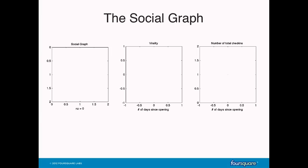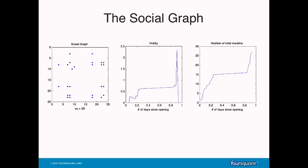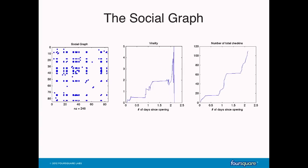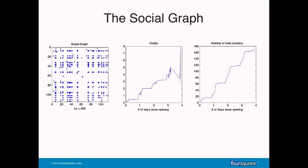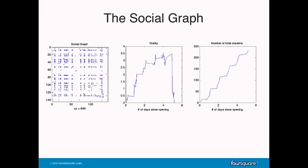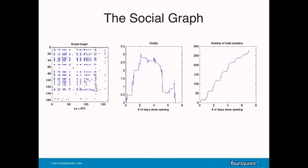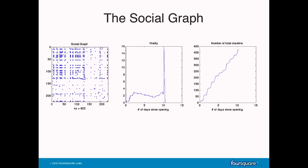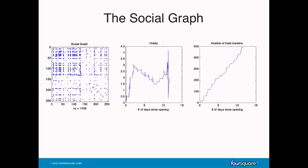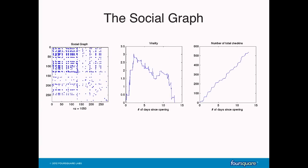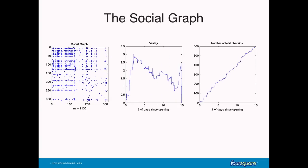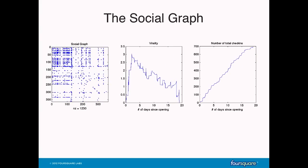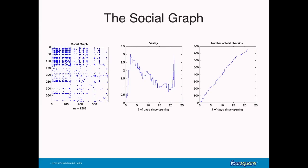There's a much richer phenomenon going on underneath. Here's another picture: on the right we see number of check-ins, but on the left I'm also plotting the social graph of the people discovering this place. Every single dot represents a friendship between two people. Out of the first 120 people that came to that place, there's a strong interconnected clique — they're much more likely to be friends with each other. I'm trying to quantify with a virality measure how much this place is spreading through existing friendship connections, versus targeting new areas of the social graph.